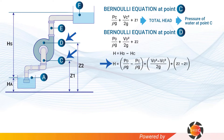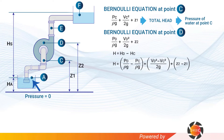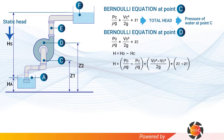Point A is the surface of the lower reservoir. At this point, the pressure head is zero because it is open to the atmosphere, and the velocity is also zero because the water is not moving. The distance between point A on the lower reservoir and point F on the upper reservoir is hs, known as the static head. At point F, the water is also open to the atmosphere, so its pressure head is zero.